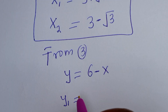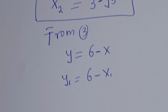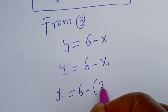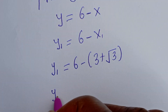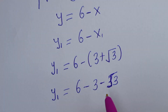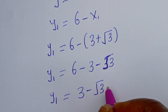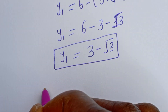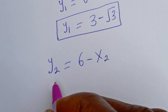y1 equals 6 minus bracket 3 plus root 3, so y1 equals 6 minus 3 minus root 3, which gives y1 equals 3 minus root 3. Also for y2: y2 equals 6 minus s2.